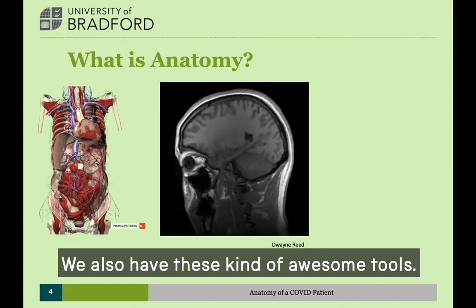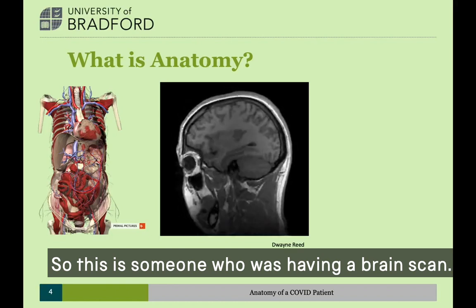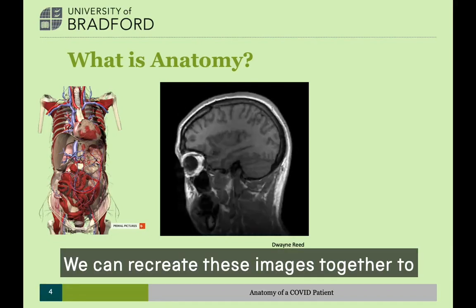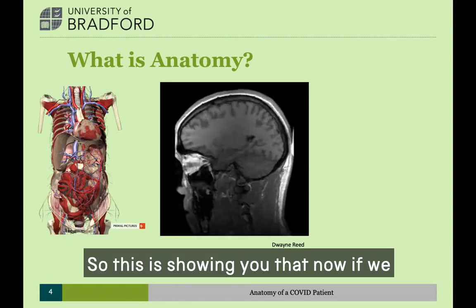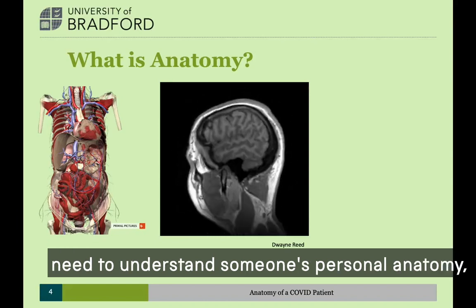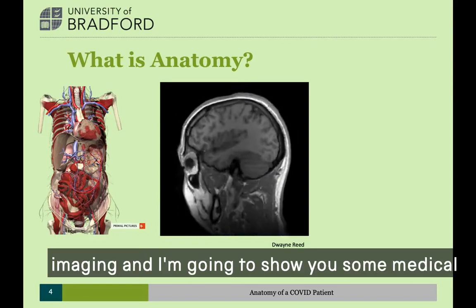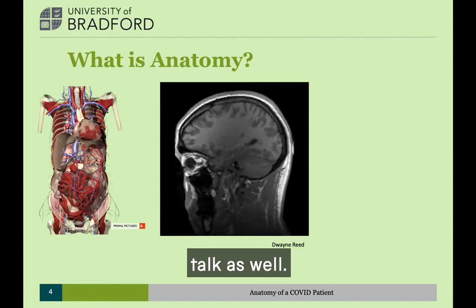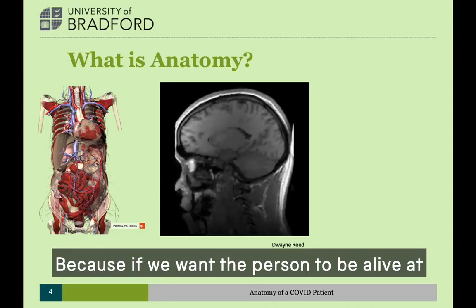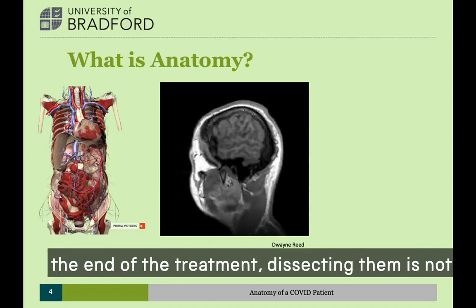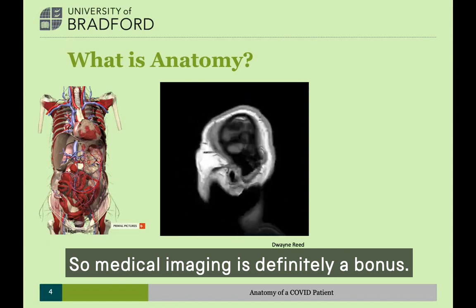We also have tools like MRI imaging, something you might find in a hospital. This is someone having a brain scan, and we can recreate these images together to make a kind of video going down into someone's body. If we need to understand someone's anatomy, we don't actually have to dissect them anymore — we can use medical imaging to see what's happening inside someone's body without dissecting them. Because if we want the person to be alive at the end of treatment, dissecting them is not always how we want to do things.